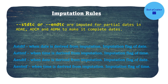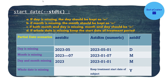Let's understand some of the variables and flags which are created when we impute dates. ASTDTF is the imputation flag for date when the start date is derived from imputation. ASTTMF is the imputation flag for time when the start time is derived from imputation. Similarly, AENDTF and AENTMF are used if the end date or end time is imputed. These four flags are used to indicate whether the date has been imputed or not for start and end.